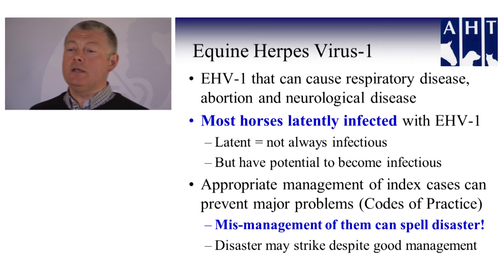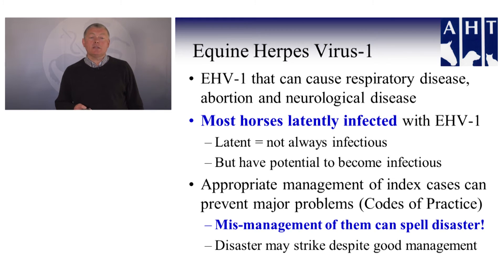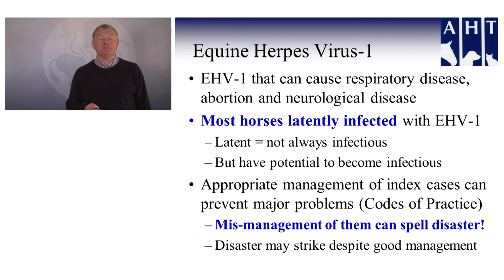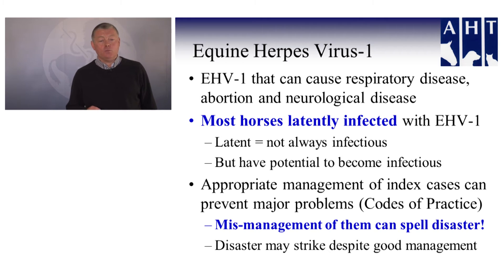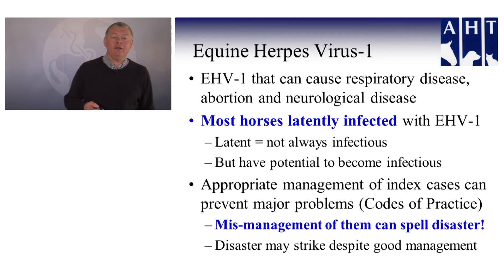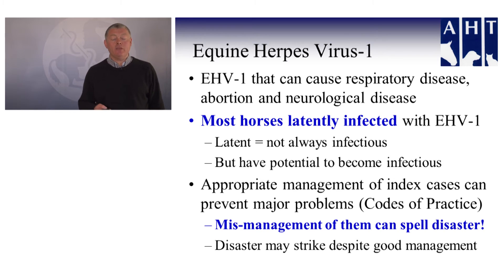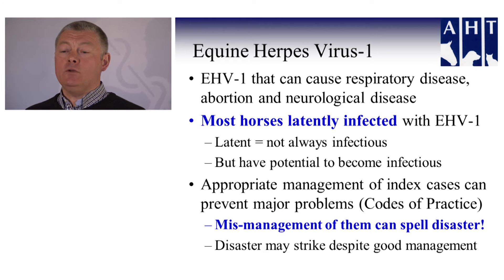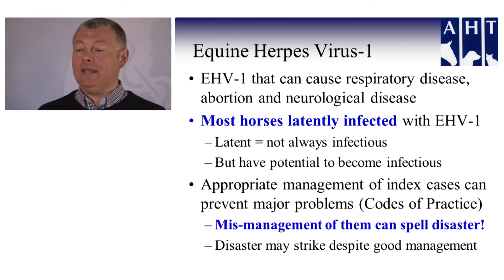Moving on to equine herpes virus — this is different again. It can cause respiratory disease, abortion in pregnant mares, and neurological disease in adult animals. Unfortunately, most horses are latently infected with this virus. By latent, we mean they're not always infectious — they're harbouring a silent form of the virus and not infectious to other horses all of the time. But they do have the potential to become infectious, particularly if they become stressed and the virus re-emerges. With cases of EHV-1, appropriate management of the first index cases can prevent major problems.